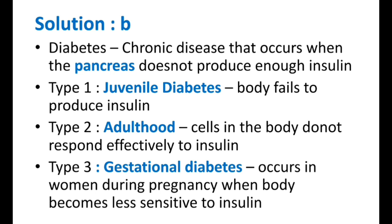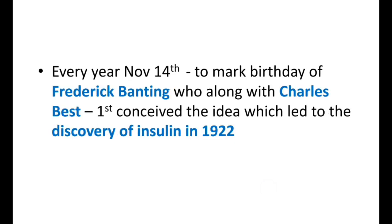You need to remember all the types of diabetes. Type 1 is also known as juvenile diabetes and is seen in children. Type 2 occurs in adults — the body produces insulin, but cells in the body do not respond effectively to it. Type 3 is also known as gestational diabetes, which occurs in women during pregnancy when the body becomes less sensitive to insulin. Recently a PSC question asked which type of diabetes is seen in children — remember all these types, they are very important.